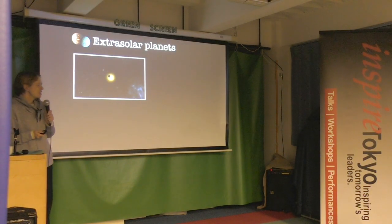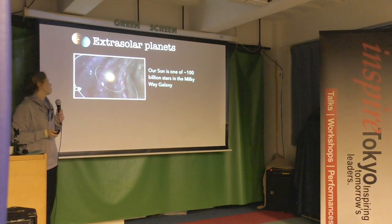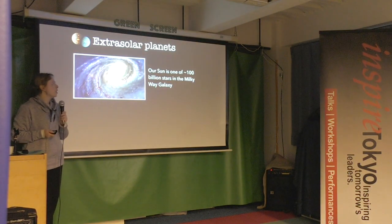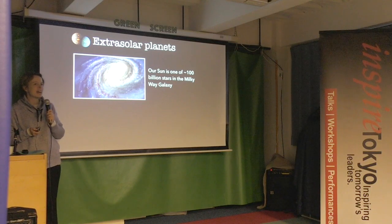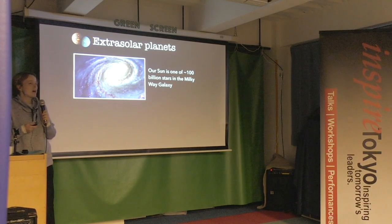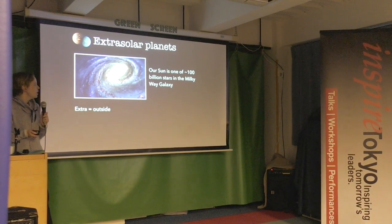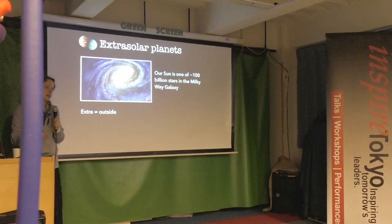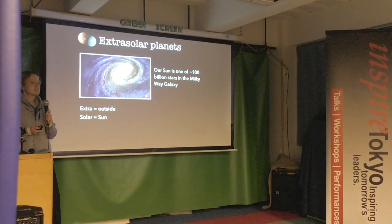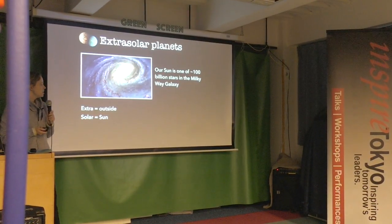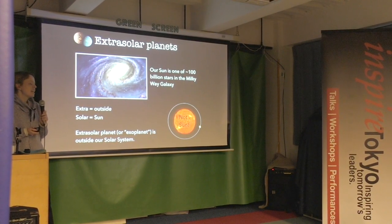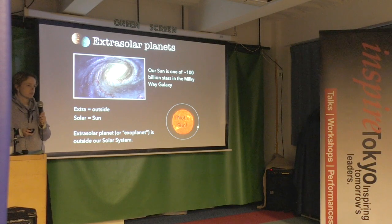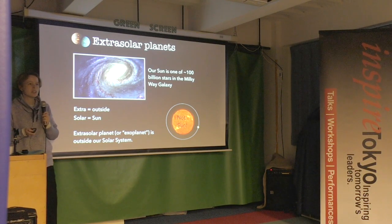Just to remind ourselves what an exoplanet is: our Sun is only one of a hundred billion stars in the Milky Way galaxy. 'Extra' means outside and 'solar' means sun, so an extrasolar planet — or exoplanet — is any planet that is not orbiting our Sun.